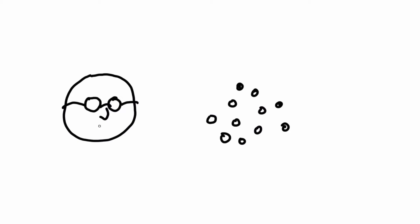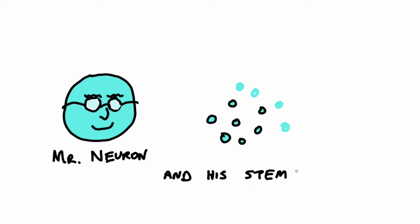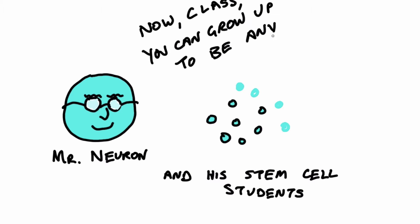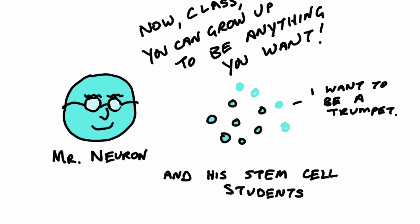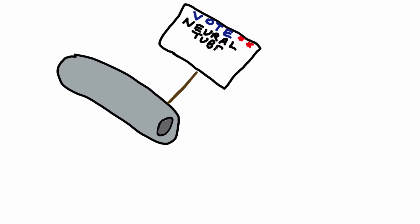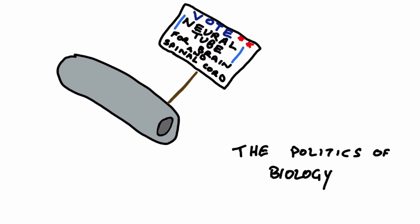Brain development, for our purposes, begins with neural stem cells. These are also known as neural progenitor cells because they have the ability to form any of the various cell types involved in the central nervous system. Fast forwarding slightly, the next step is the formation of the neural tube, from which the brain and spinal cord are developed.